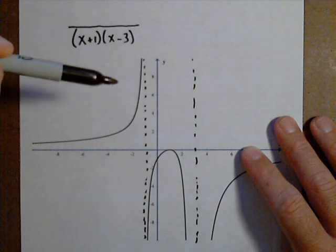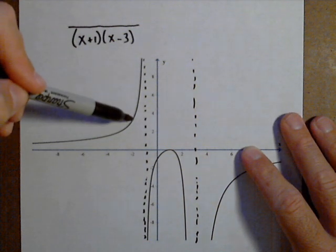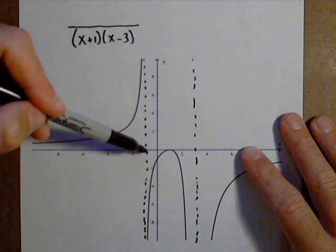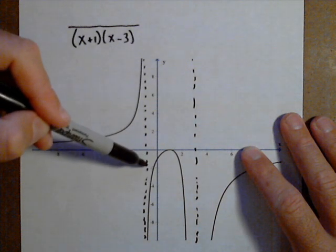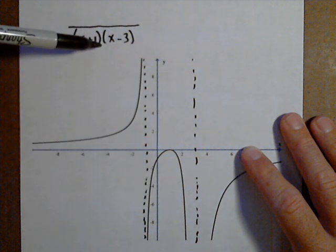Now we want to check for any possible multiplicities. It goes from positive to negative at the first vertical asymptote, so that would imply an odd multiplicity, so we'll just leave it at one for now.